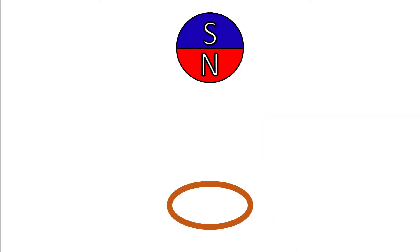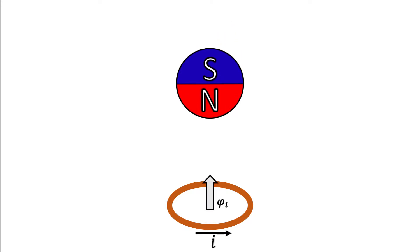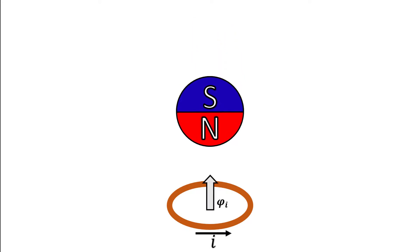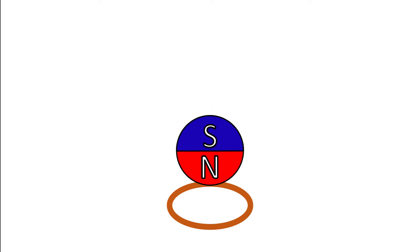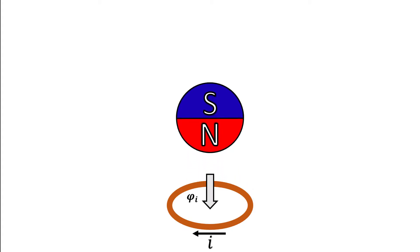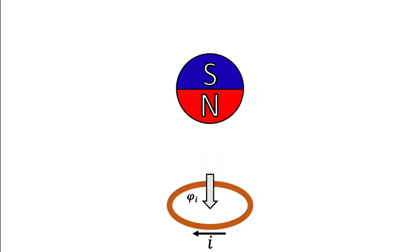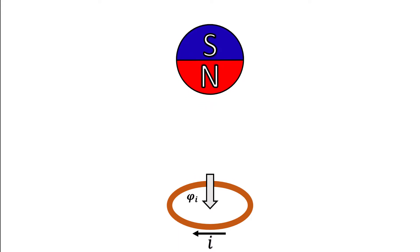If the permanent magnet approaches, flux in the coil increases, so the current induces a magnetic field in the opposite direction. On the other hand, if the permanent magnet moves away from the coil, magnetic flux is reduced, so the current induces a magnetic field in the same direction as the permanent magnet.